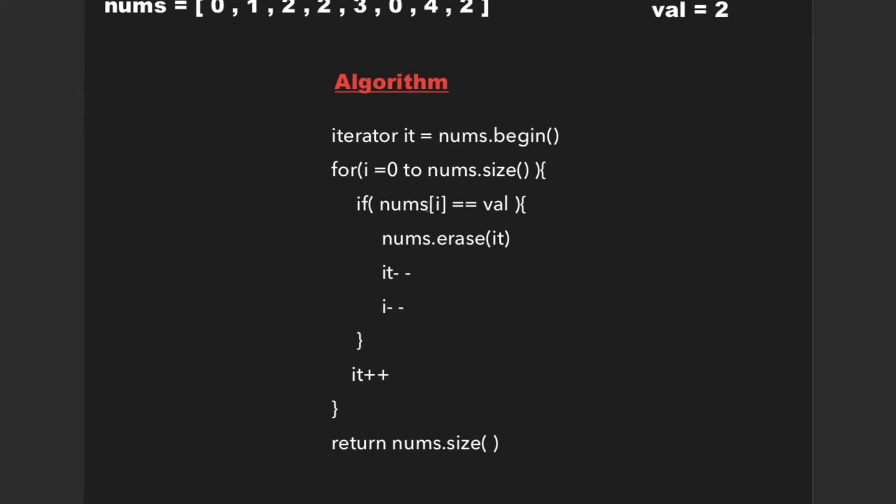And if nums[i] is equal to val, that is, if any of the elements of nums array is equal to val, then we erase that element and decrement it.